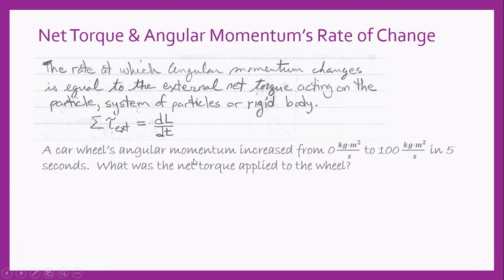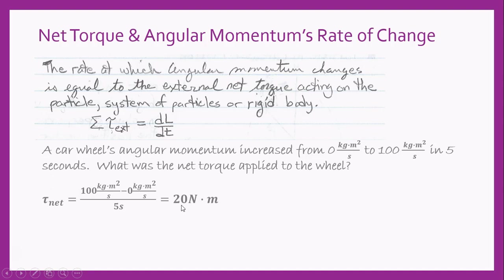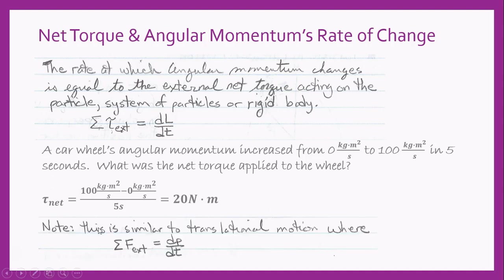A car wheel's angular momentum increased from zero to 100 kilogram meters squared per second in five seconds. What was the net torque applied to the car wheel? We take our change in angular momentum and divide by the amount of time, and we find that the net torque was 20 newton meters. This is similar to translational motion, where the net force equals the rate at which linear momentum changes.